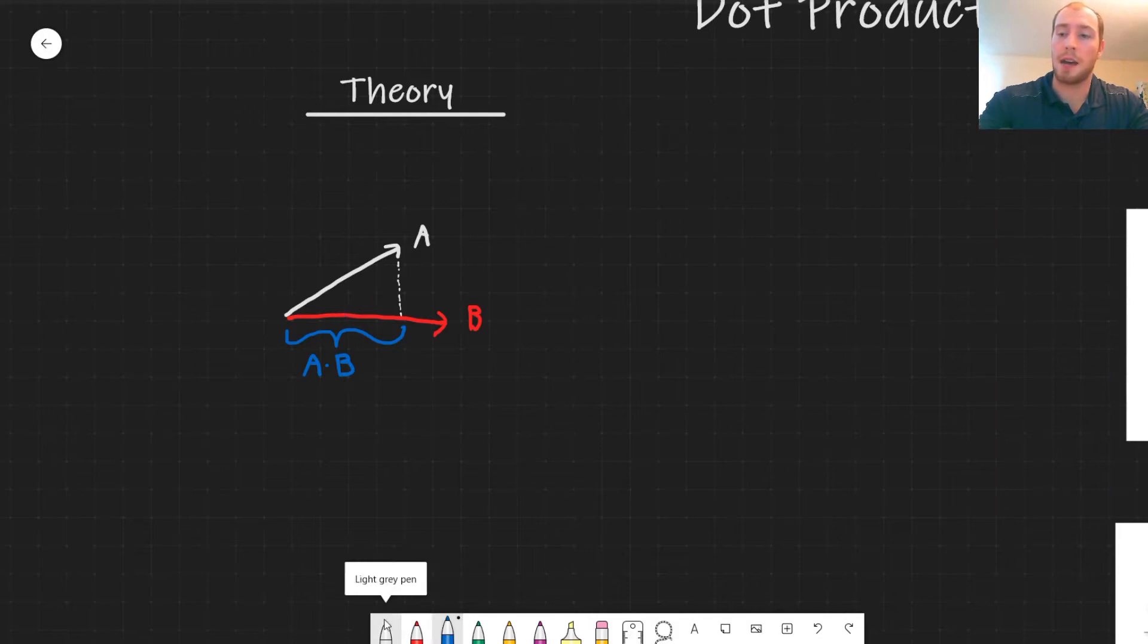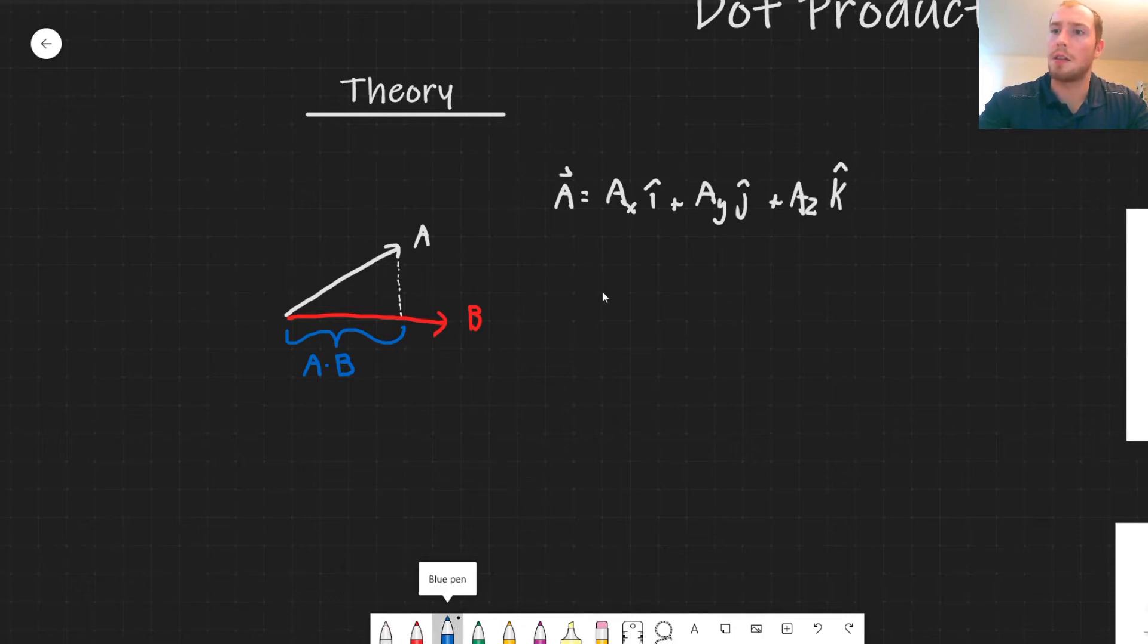Now if we want to describe this mathematically, we can write out the vector A. A is equal to AX in the X direction, so i, then we have plus AY in the j direction, so the Y direction, and then AZ k, so that's in the Z direction. And then we write out this for the vector B as well, and we're describing this in 3D. You can also apply the same methodology in 2D as well. So this is BX i plus BY in the j direction, and then plus BZ in the k direction.